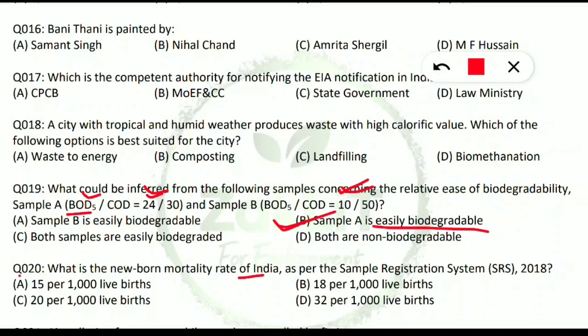Question 20: what is the newborn mortality rate of India as per the Sample Registration System (SRS) 2018? This is a general knowledge question. The correct option is 32 per thousand live births — meaning 32 newborn babies die per thousand births in India as per SRS 2018.